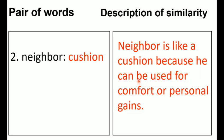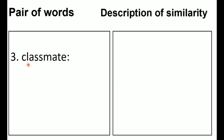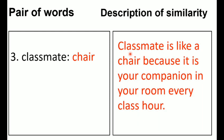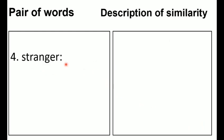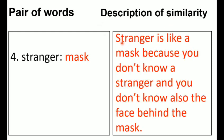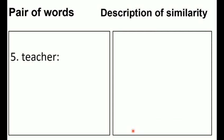Number three: classmate is being compared to a chair. Description of similarity: a classmate is like a chair because it is your companion in your room every class hour. Number four: stranger is being compared to a mask. Description of similarity: a stranger is like a mask because you don't know a stranger, just as you don't know the face behind the mask.